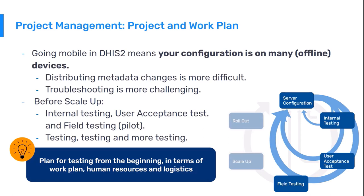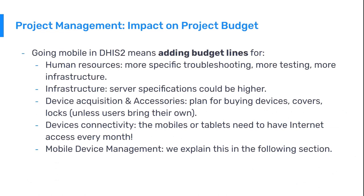The duration of the testing cycles will depend on the nature of each phase. Going mobile on DHIS2 will also have budget implications, and it's important to define them at the beginning of the project to avoid problems. From the human resources perspective, it should include additional costs related to troubleshooting, configuration, and testing. Server specifications might need to be increased due to load peaks when having a large number of devices. In general terms, mobile devices are likely cheaper than desktops or workstations, but the number of devices will probably increase, and they might need to be purchased with accessories.